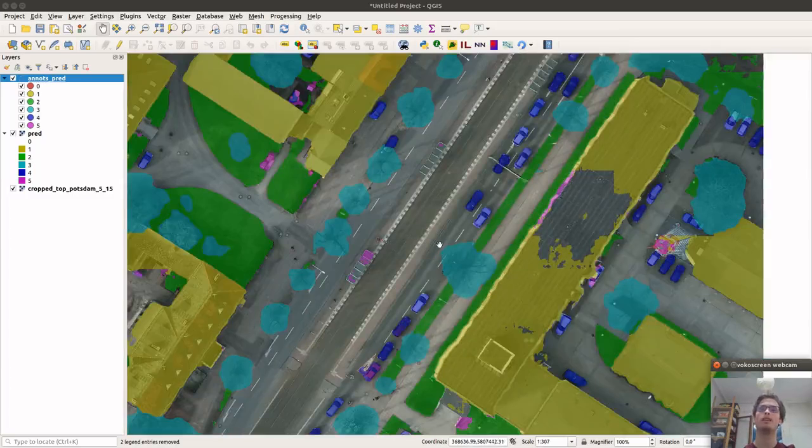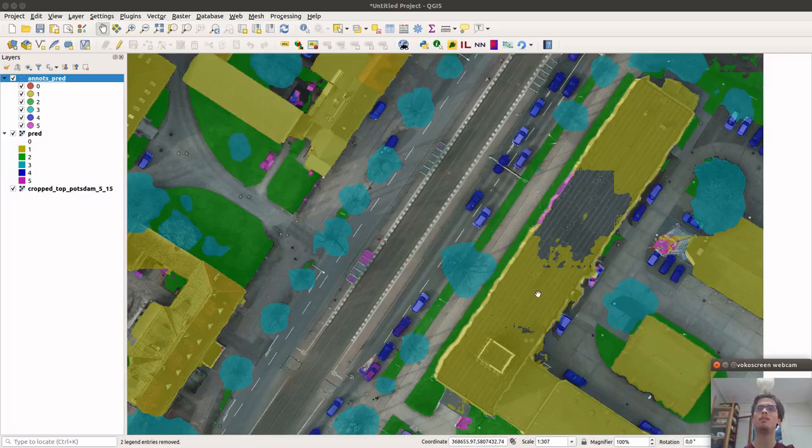So here, the colors are in transparent the roads, in blue the cars, in green the vegetation, in cyan the trees, in yellow the buildings, and in magenta the clutter.